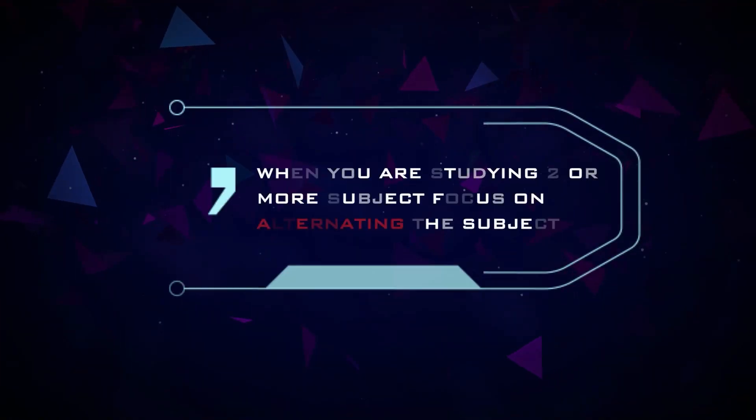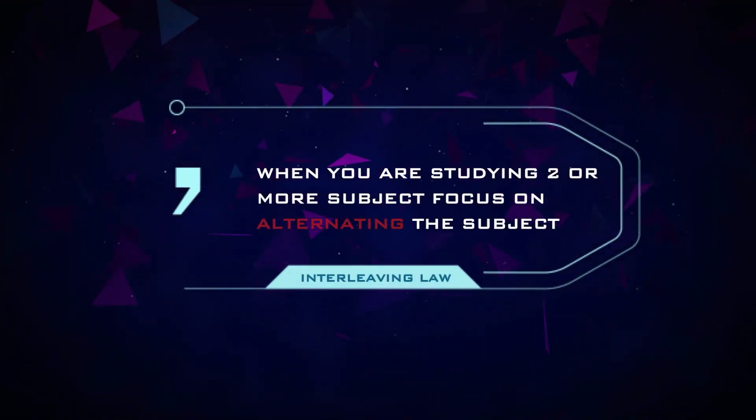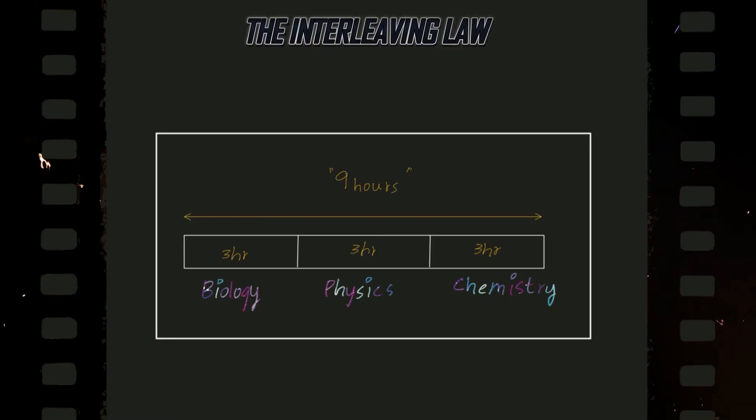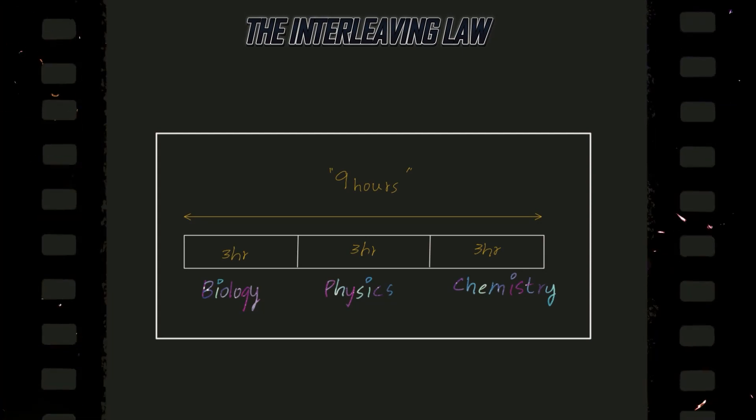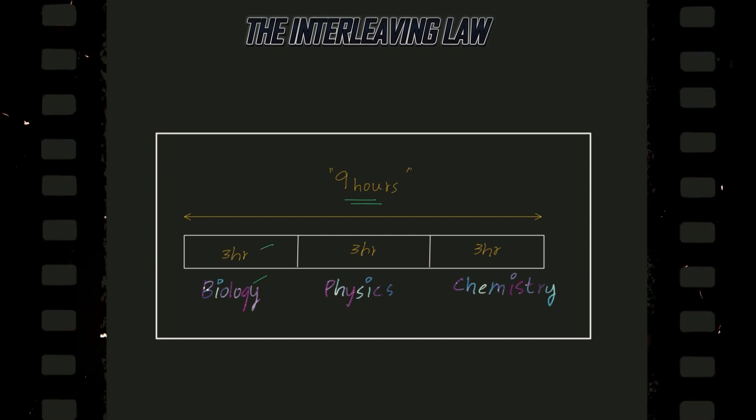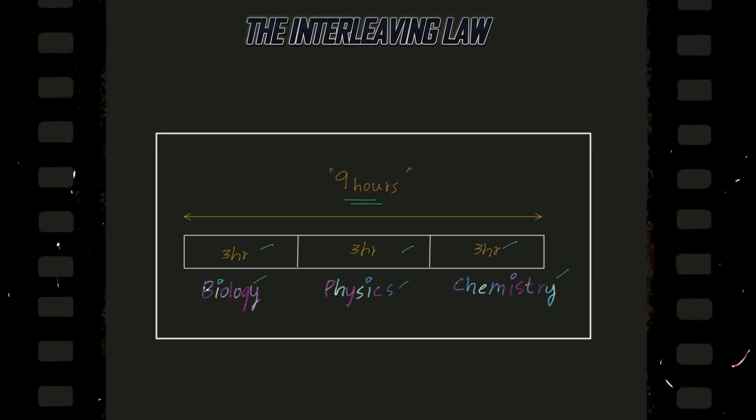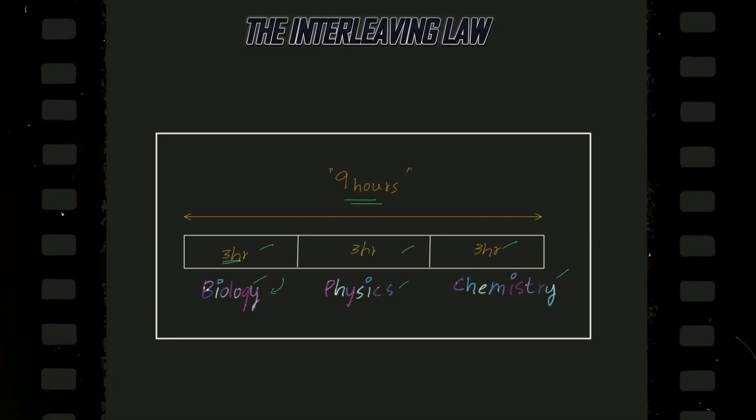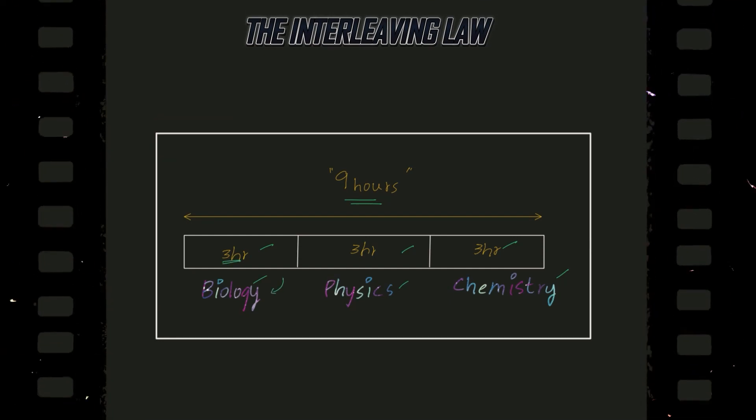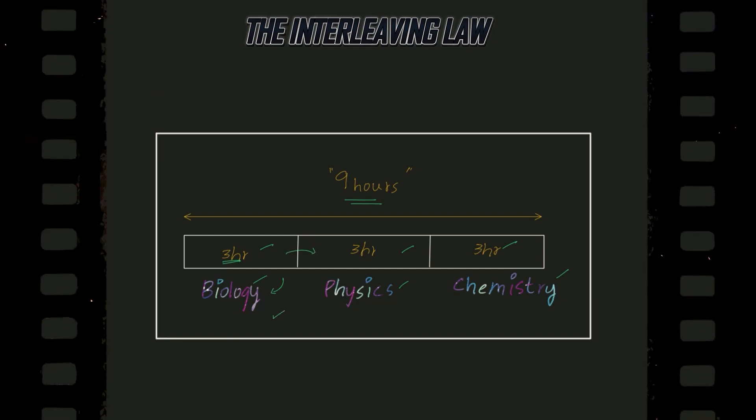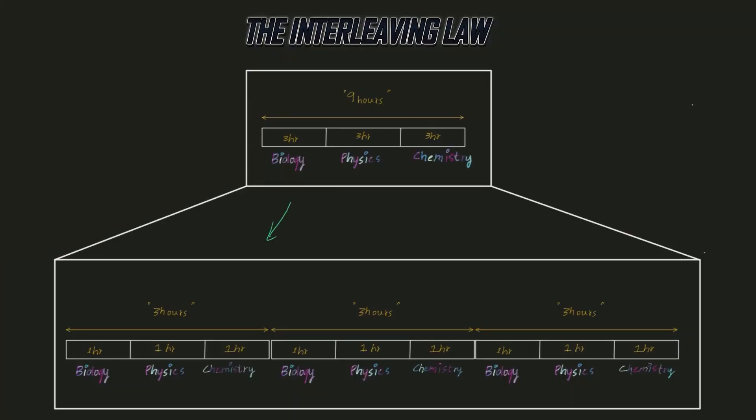The interleaving law says that when you're studying two or more subjects, instead of focusing exclusively on one subject at a time, it can be helpful to alternate between them. Most students follow this study pattern: if they have a total of 9 hours to study per day, they study biology for 3 hours, physics for 3 hours, and chemistry for 3 hours. They believe that complete 3-hour dedication to that particular subject will make them concentrate and focus much better. Once they're done with the job, they move on to the next subject.